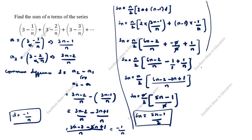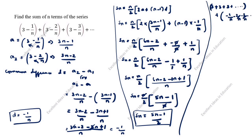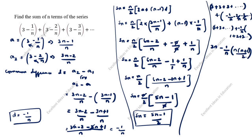This was the first method. In the second method, we separate the series: (3 + 3 + 3 + ... n times) minus (1/n + 2/n + 3/n + ...). Taking -1/n outside the bracket gives: 3n - (1/n)(1 + 2 + 3 + ...).